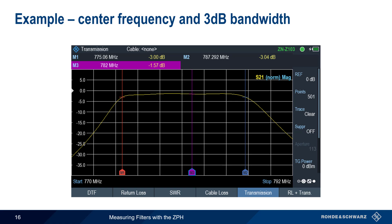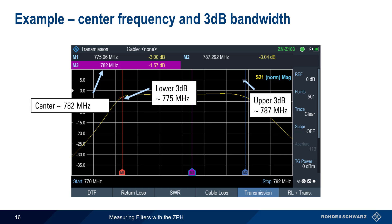Let's use markers to make some basic filter measurements. We've placed three markers: one on the center frequency of our filter pass band, here approximately 782 MHz, and one each on the lower and upper 3 dB points, which is how filter pass band is normally specified. Looking at the difference between these two 3 dB points, we can calculate the pass band of our filter as being approximately 12 MHz.